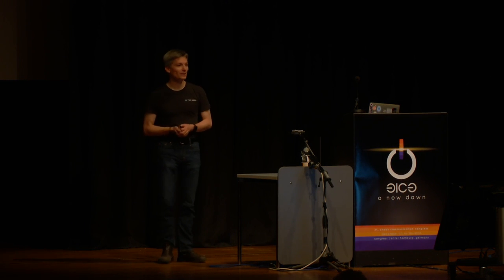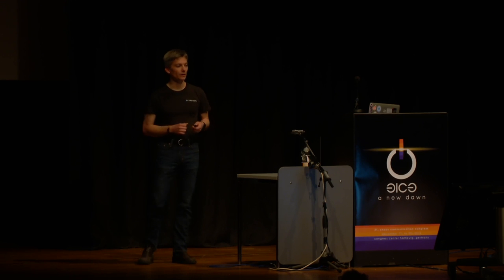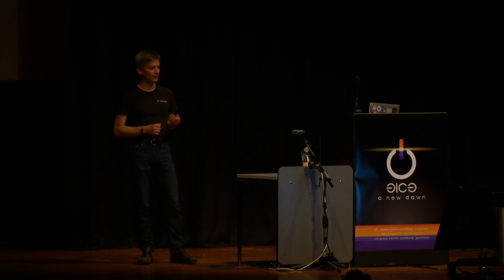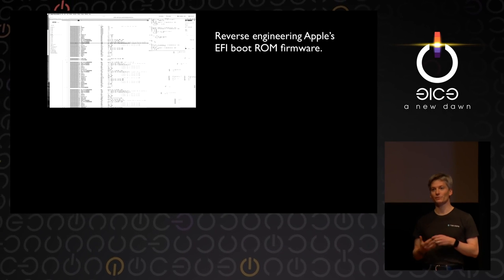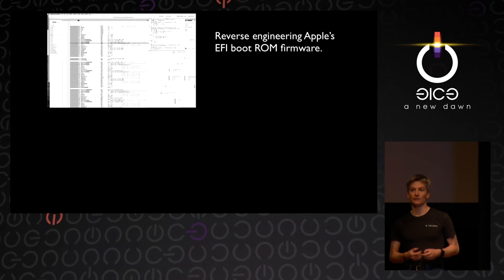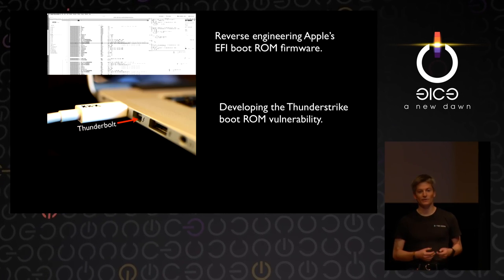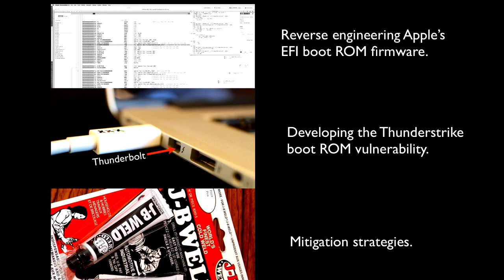I'm Tramil Hudson, and I really like to take things apart. In this talk, I'm going to be talking about Thunderstrike, which is an EFI firmware rootkit for Apple MacBooks. The talk has a few parts: the first half is about the journey of reverse engineering the EFI bootrom in the MacBook, the second half is about developing the Thunderstrike vulnerability, and the third half is about mitigation strategies — what can we do to prevent it that are hopefully better than epoxying the ports shut.